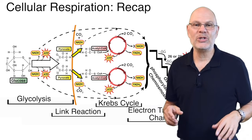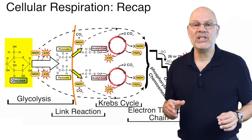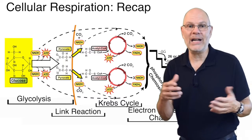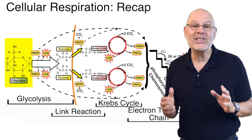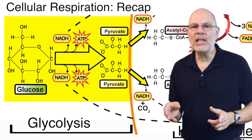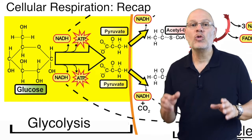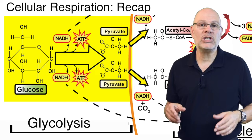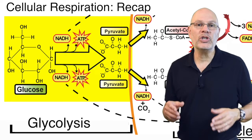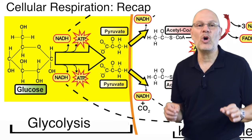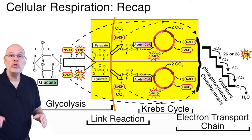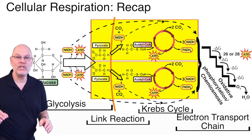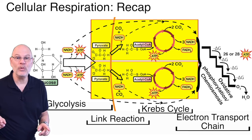Now let's walk through this diagram with all of our accumulated knowledge. The process starts with glucose diffusing into cells. Glycolysis takes glucose and oxidizes it, creating two NADHs. Substrate level phosphorylations create two ATPs. The end result is two three-carbon molecules called pyruvate, also known as pyruvic acid. Note that after glycolysis, the next two phases of cellular respiration run twice — once for each molecule of pyruvate.